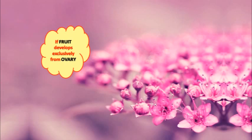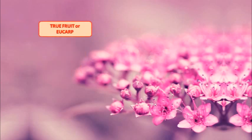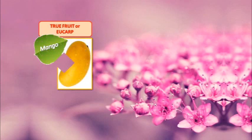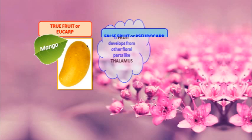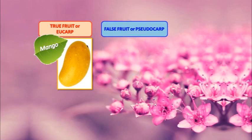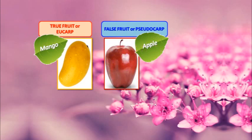If fruit develops exclusively from the ovary, then that is called a true fruit, also called as eucarp. For example, mango. If fruit develops from other floral parts like the thalamus, then that is called a false fruit or pseudocarp. Example is apple. Whenever you see apple, just remember it is a false fruit, which is developed from the thalamus — so apple is a pseudocarp, not a true fruit like eucarp.